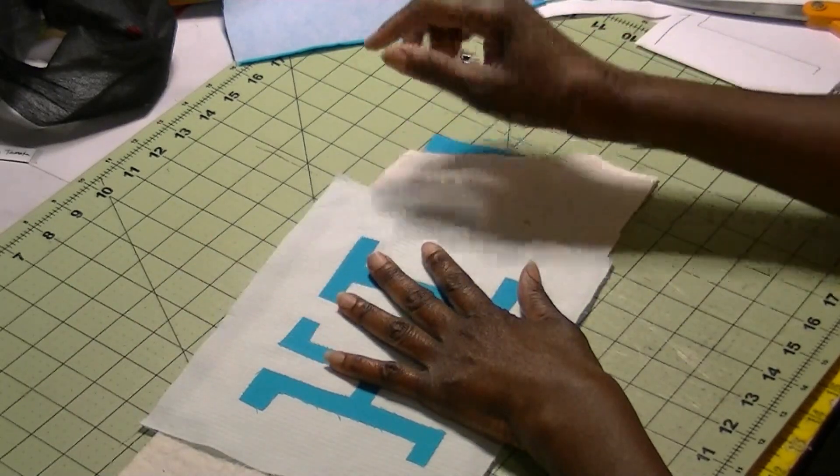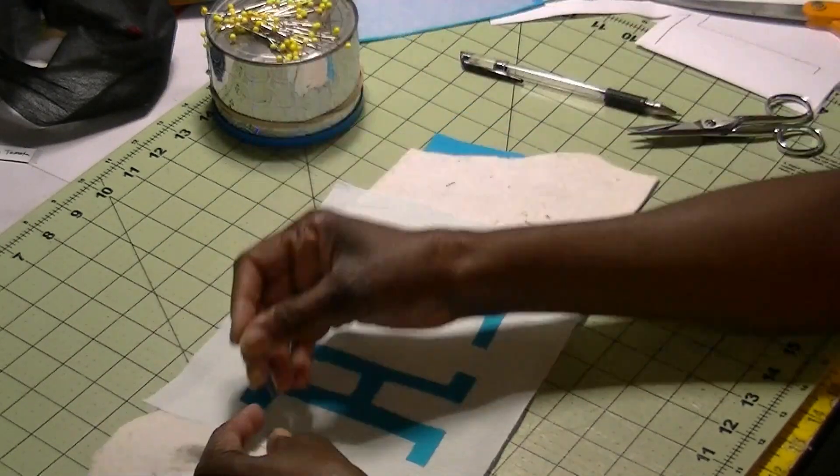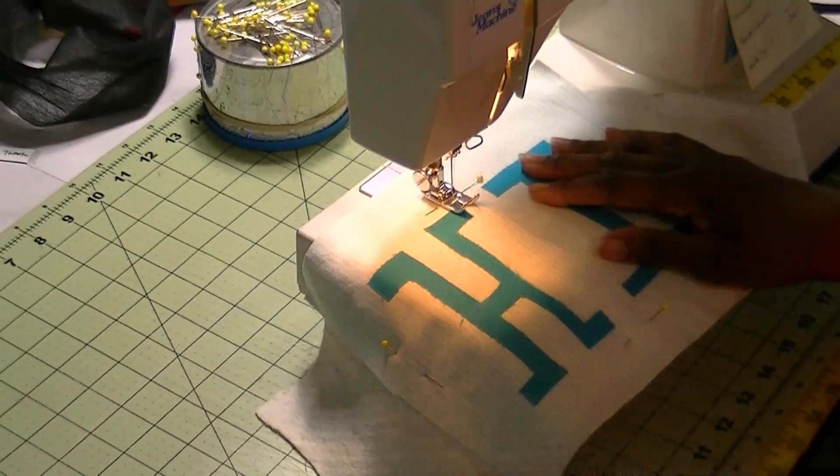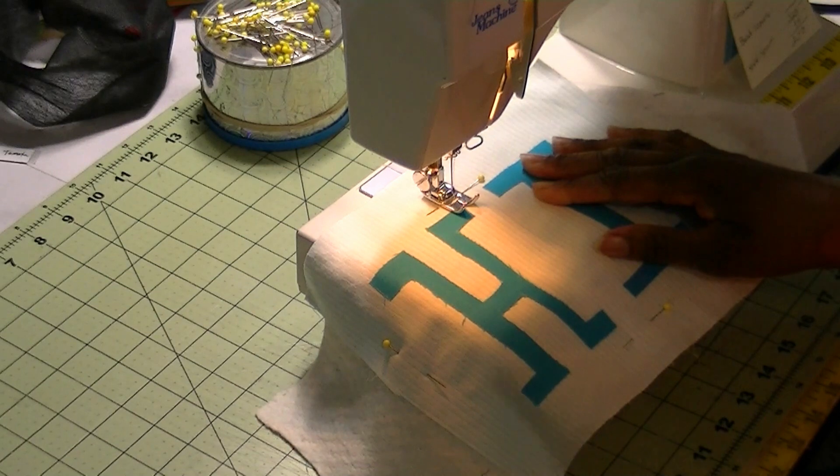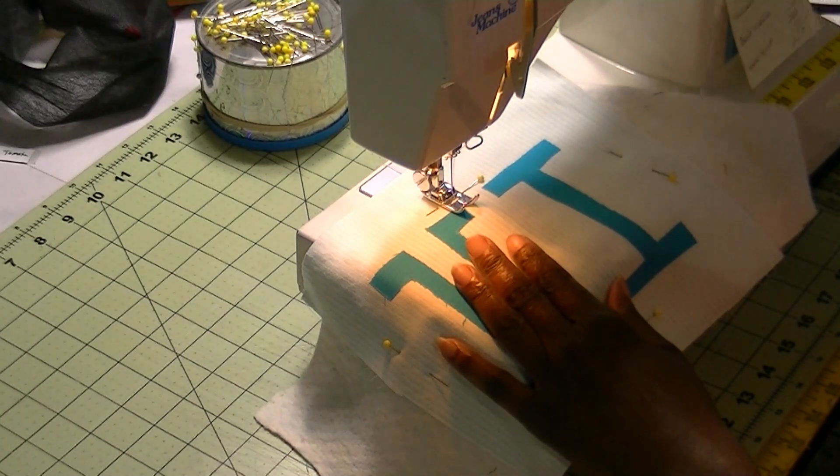Then, of course, your batting and your quilt backing. And, of course, you want to pin this in place. So now you can use a zigzag stitch. You can use any decorative stitch that you have on your machine. I am using a blanket stitch,